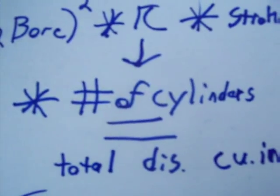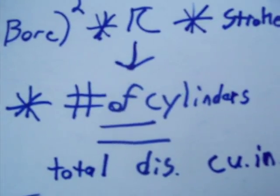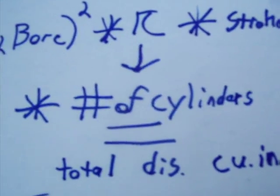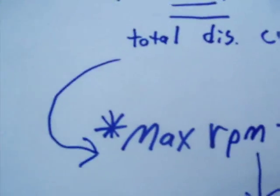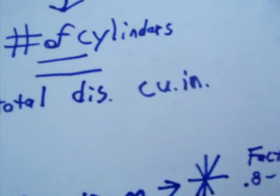You take that, you multiply it by the total number of cylinders you have. So if it's a six-cylinder, it would be by six. If you have an eight-cylinder, it would be by eight. That is your total displacement in cubic inches.